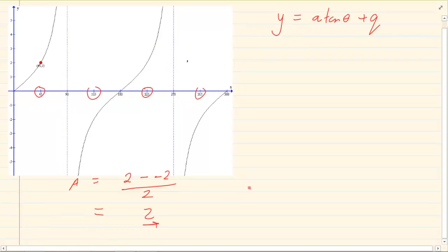Remember it works the same. If it's a standard form graph then it is a positive A. But if your graph is upside down then it's going to be a negative. Okay. So in this case we can clearly see that it's a standard graph. So we have y is equal to 2 tan theta plus q.